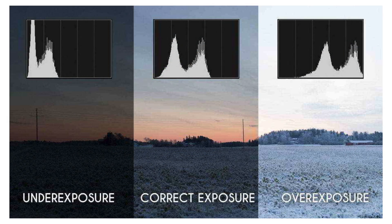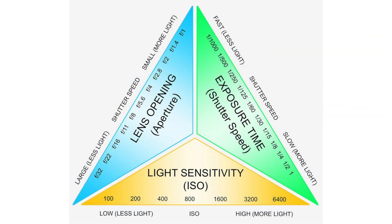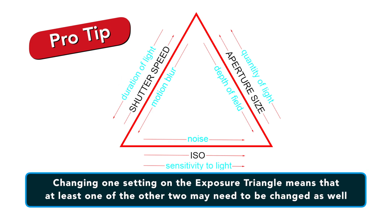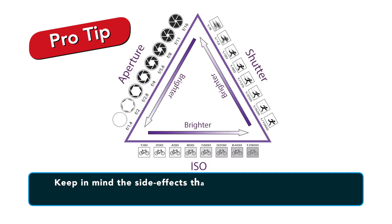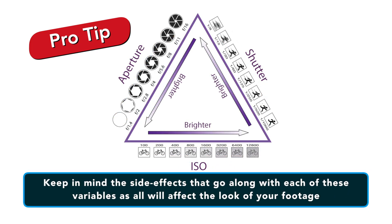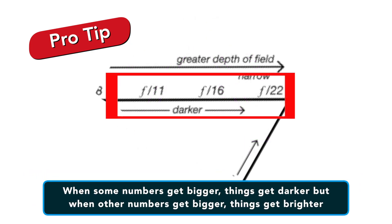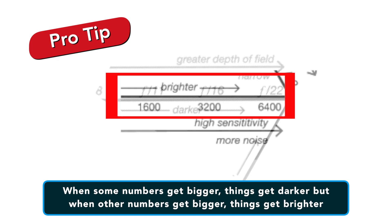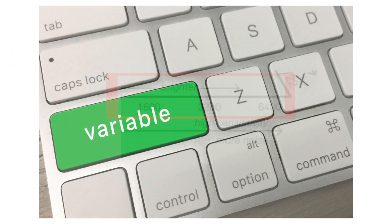There are several ways to arrive at the correct exposure — there are three points of the exposure triangle. Unfortunately, changing one setting of the exposure triangle means that at least one of the other two may need to be changed as well, all the while keeping in mind the side effects that go along with each of the three variables. What's more, when some numbers get bigger things get darker, but when other numbers get bigger things get brighter. So here's a quick look at what's going on with each variable.